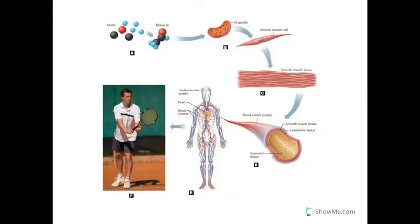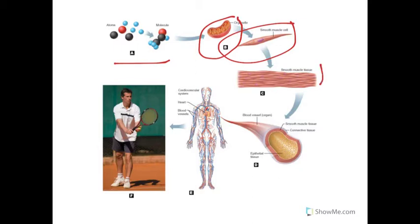Let's review the levels of organization that we talked about way at the beginning of the year. This is important to get the whole scope of what we're looking at here in biology. So we start at the really small level with atoms and molecules. These molecules fit together to make bigger pieces — like a phospholipid that makes the cell membrane of a cell or the membrane of an organelle. Together those organelles make a cell, and then a bunch of cells together makes what we call a tissue. The tissues put together make organs and then organ systems.